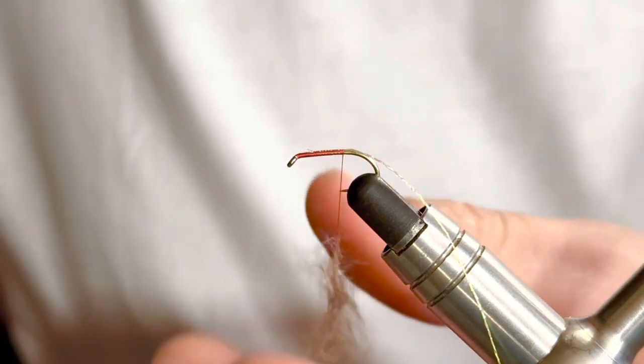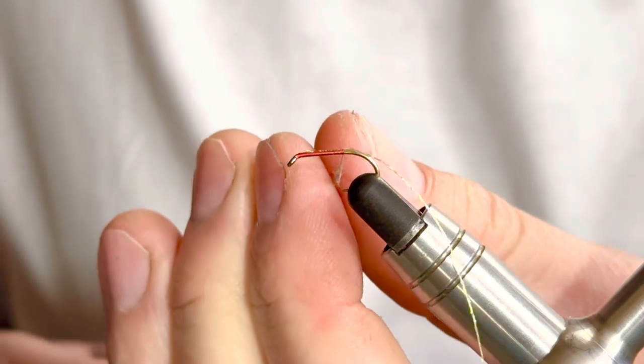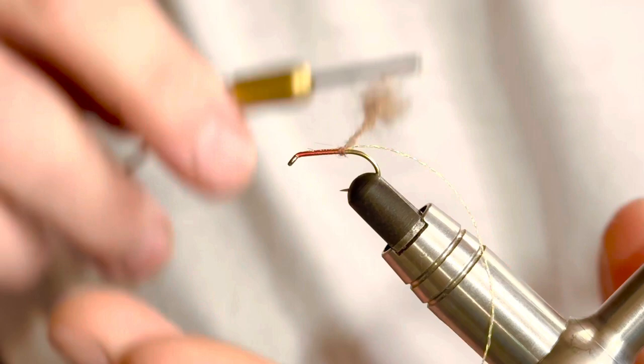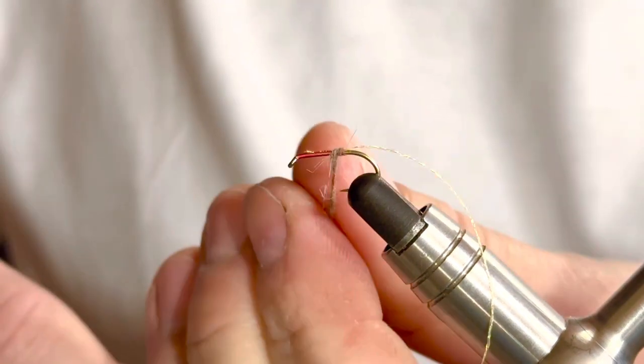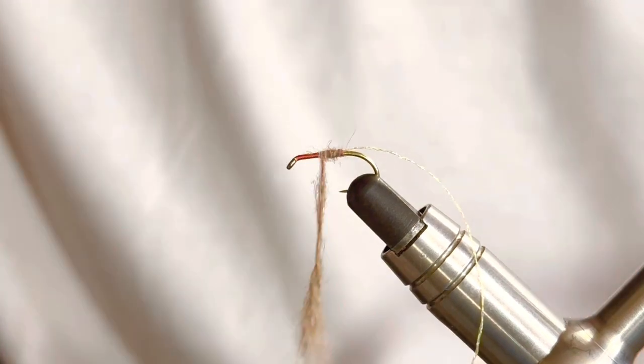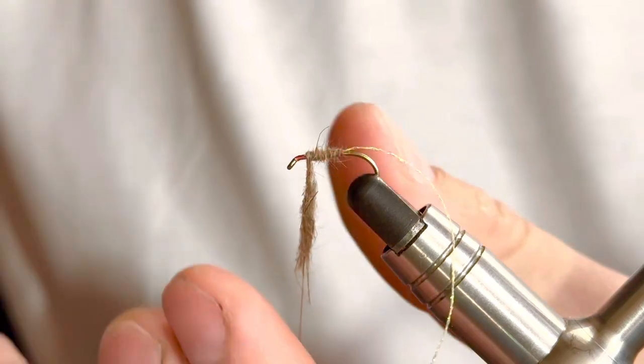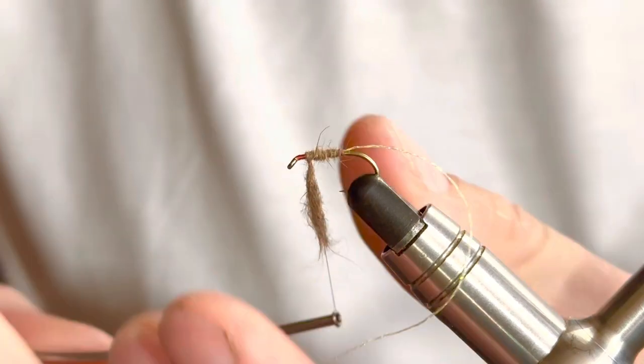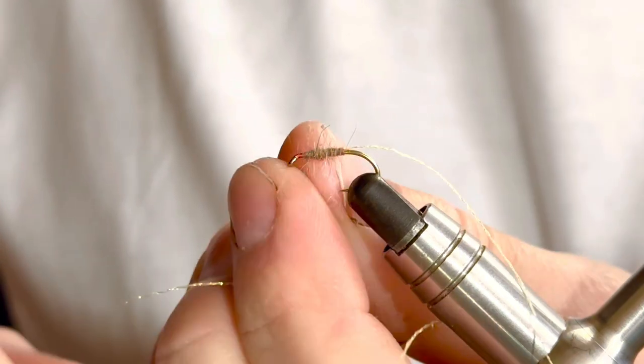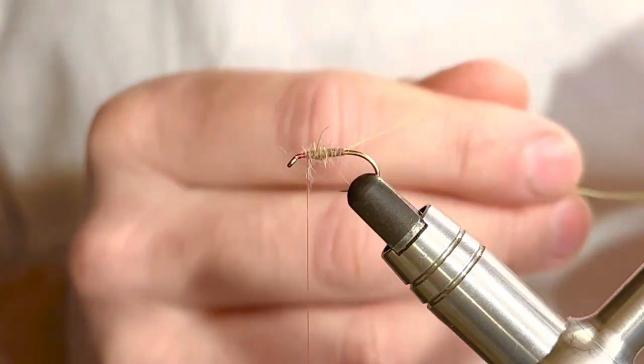Catch your dubbing on, slide it up, and again you're going to want to create a slight taper into the body. Keep bringing that dub body up until you're about five millimeters or so from the eye of the hook.